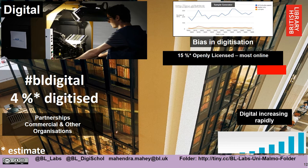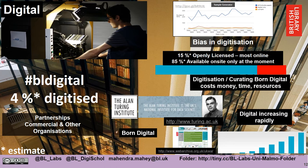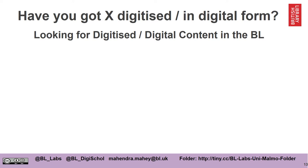Only 15% of our digital collections are openly licensed and online. 85% of our digital collections are only available on site. We also capture born digital collections like websites and eBooks, and we are a significant partner in the Alan Turing Institute, which is a centre for artificial intelligence and machine learning. Digitizing our collections costs money, time and resources.